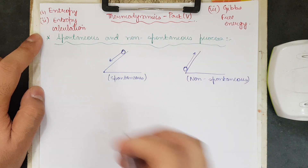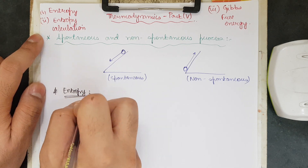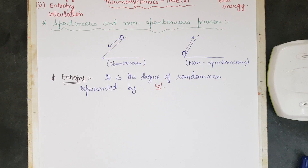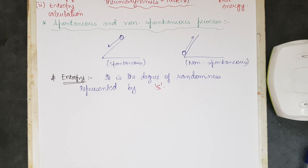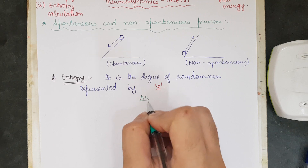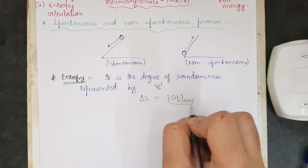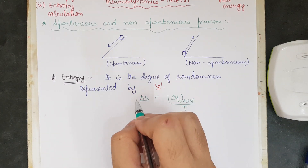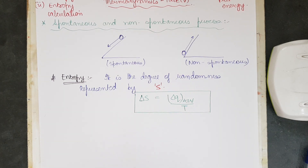Now let us move on to the concept of entropy and understand what it means. Entropy is the degree of randomness and is represented by the letter S. Mathematically, entropy change delta S is defined as delta Q reversible upon the temperature at which it is measured. This is the mathematical formula for entropy, and we shall use it to derive expressions for thermodynamic processes.